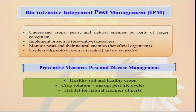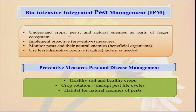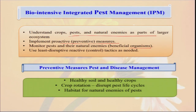Bio-intensive integrated pest management is more rational for our organic farming where we cannot use any inorganic pesticide or fungicide. So we have to understand the crop pest and natural enemy. We have to implement protective measures — I have already covered different types of preventive measures: clean cultivation, seed should be very good and not infested with insect pests and disease spores. We also have to monitor pests — what are our beneficial organisms and what are our harmful organisms. Similarly, we have to use different types of preventive measures: pest and disease management, healthy soil and healthy crops, crop rotation, and habitat for the natural enemies of the pest.